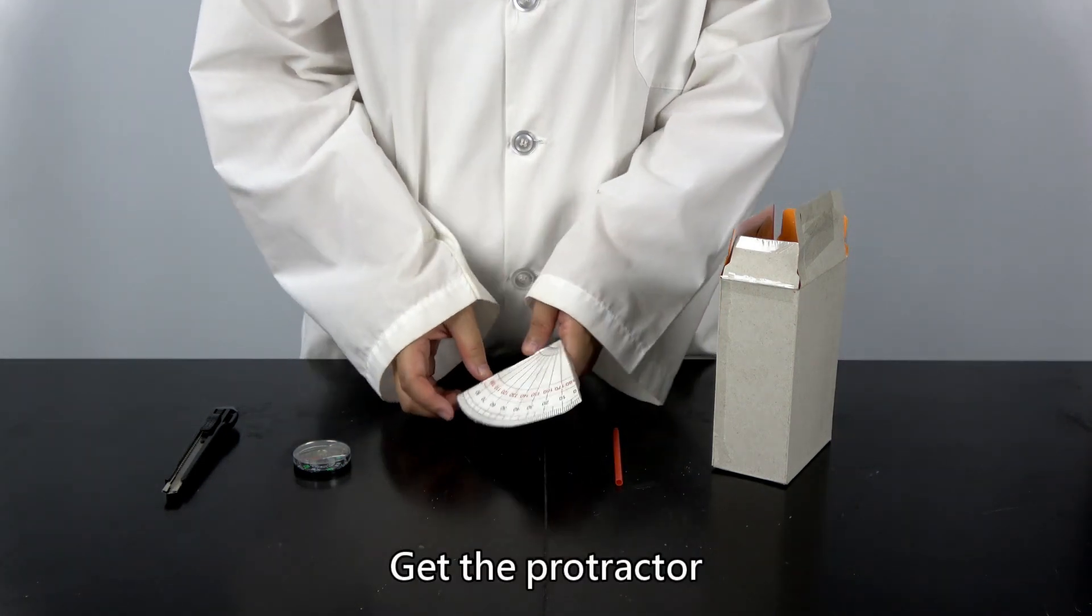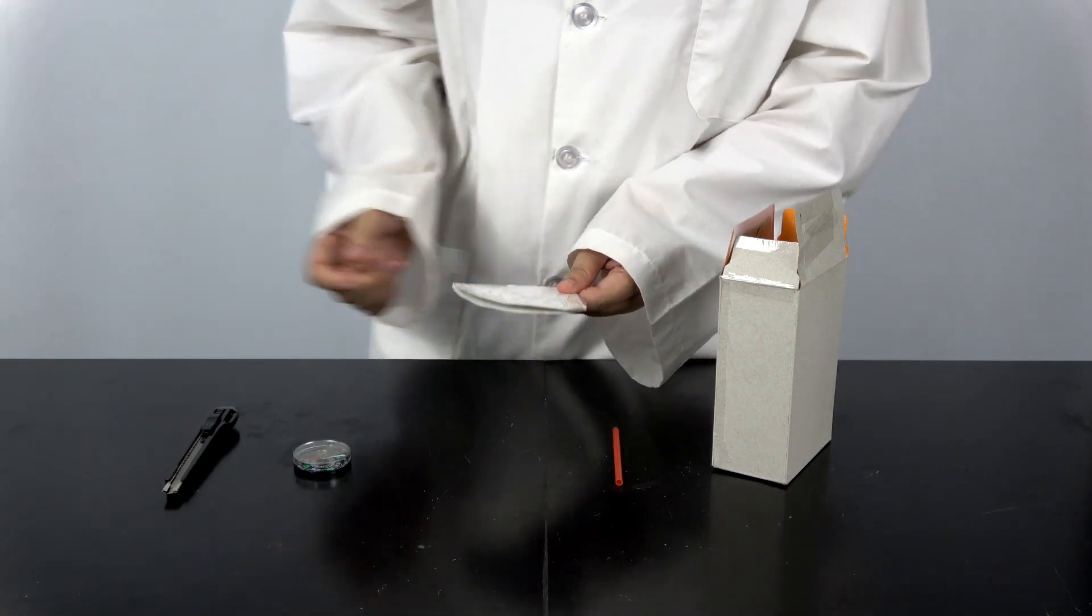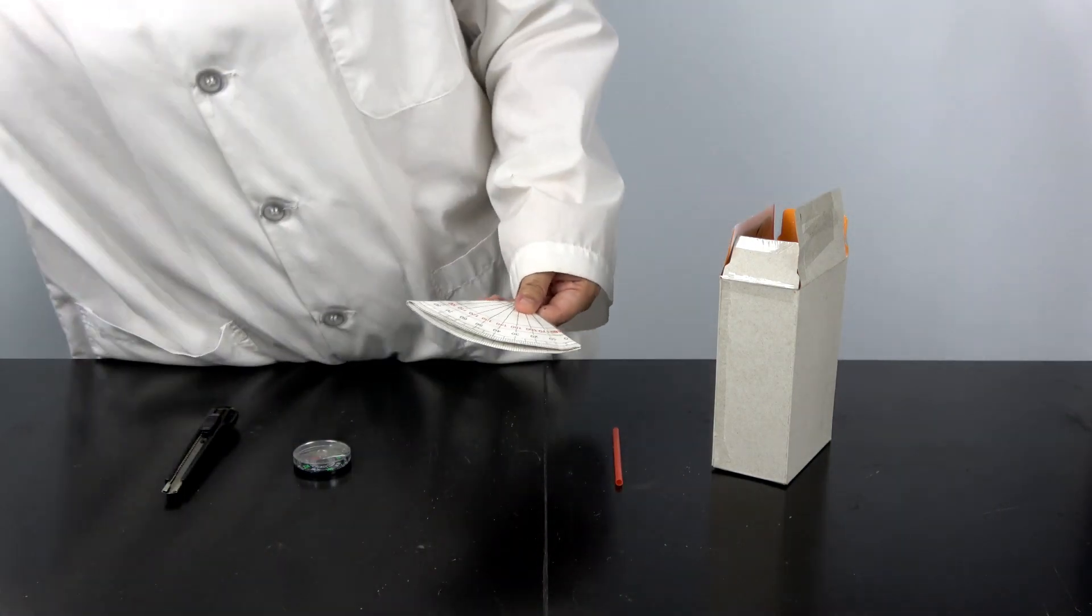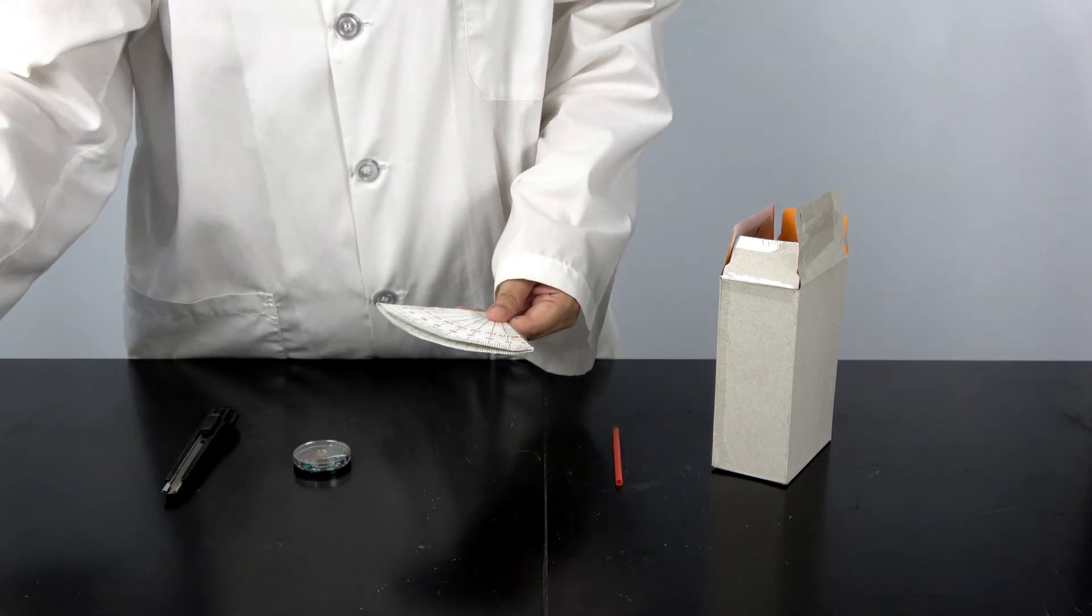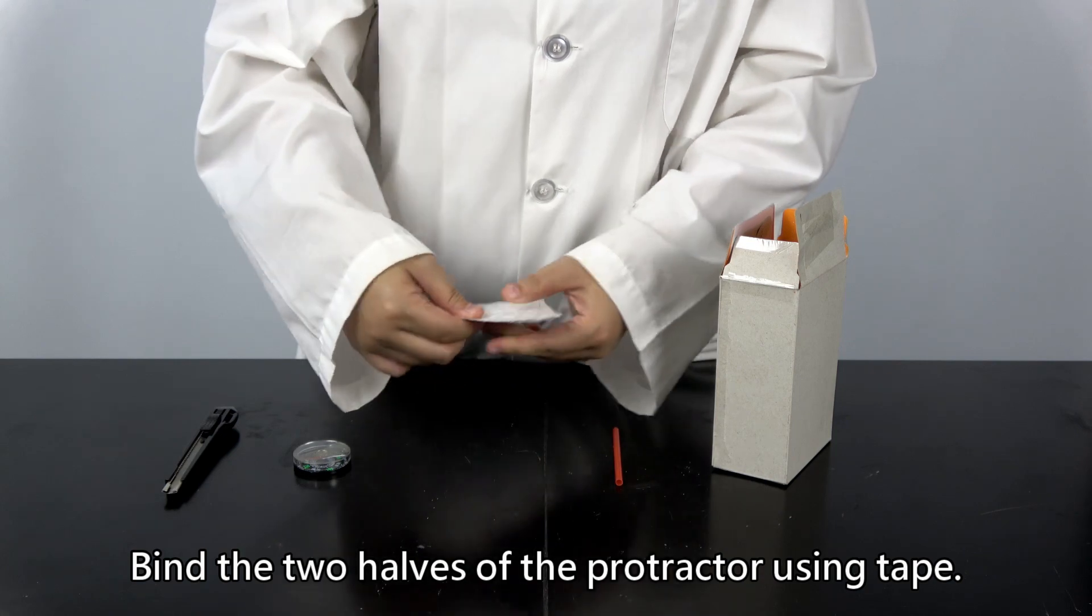Get the protractor and fold it in half. Join the two halves of the protractor using tape.